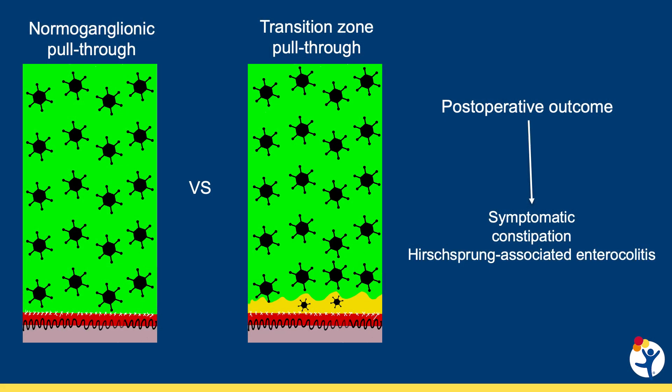In a study conducted at the colorectal center at Children's Hospital Colorado, we examined all patients with rectosigmoid Hirschsprung's disease who had undergone primary repair without colostomy between 2010 and 2020. We specifically analyzed the histopathological diagnosis of all the proximal margins and compared it with the functional outcome.